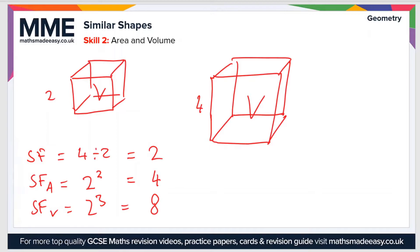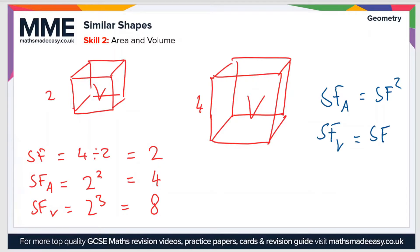To summarise: if you want to find the area scale factor, SFA, you just square the linear scale factor. And if you want to find the volume scale factor, SFV, you cube the linear scale factor.